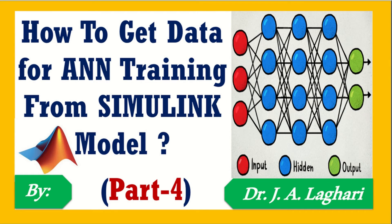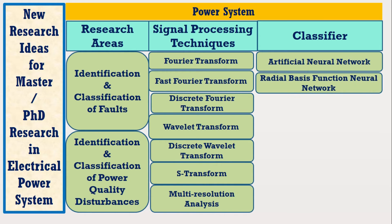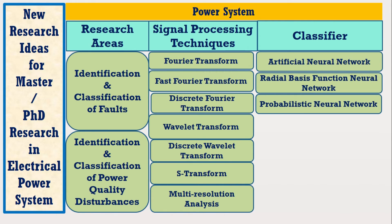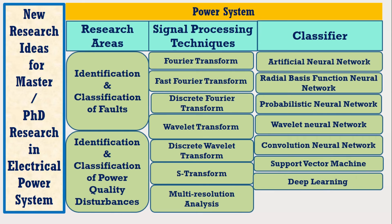Furthermore, artificial neural networks have many types, such as radial basis function neural network, probabilistic neural network, wavelet neural network, convolutional neural network, support vector machine, and deep learning with its various types.